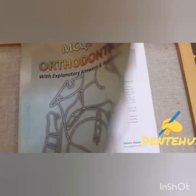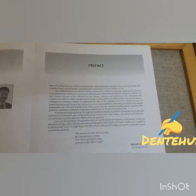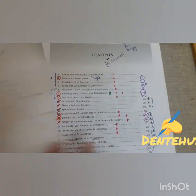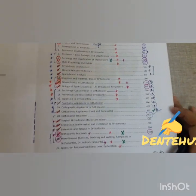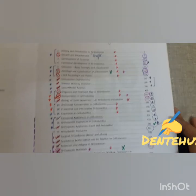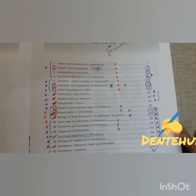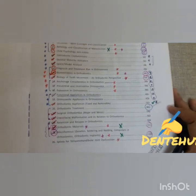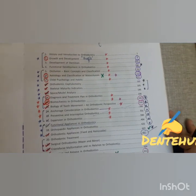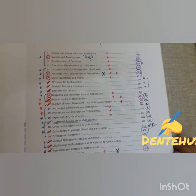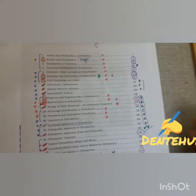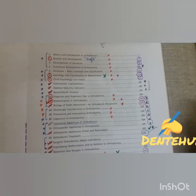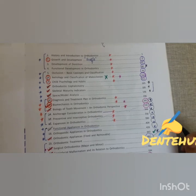Though the second edition is also available in the market, I feel this first edition is much better than the second one. If you see, there are almost 26 chapters over here, and each chapter will have approximately 100 to 200 MCQs. So in total you will have almost around 3000 to 4000 MCQs. You need not go through each and every question in detail, as you have already done your theory portion in BDS 4th or 5th year.